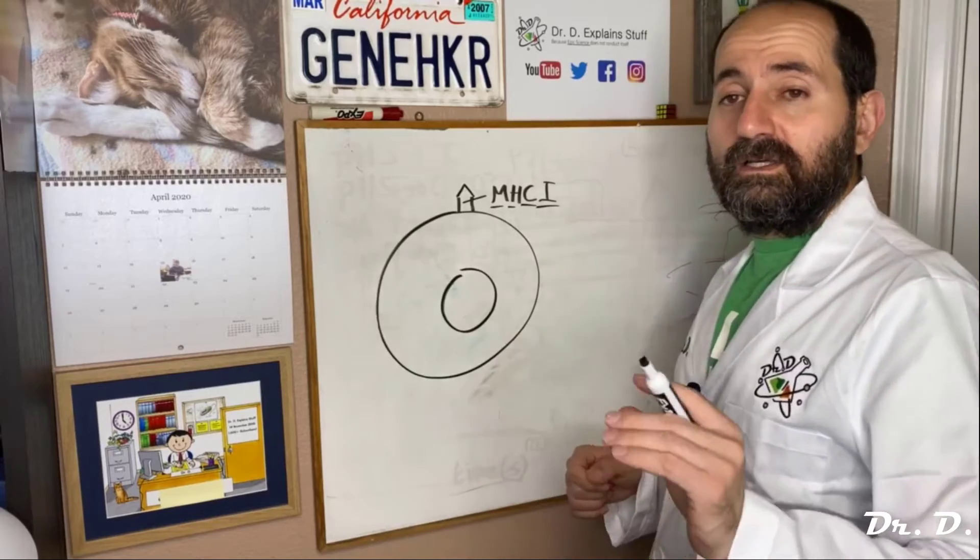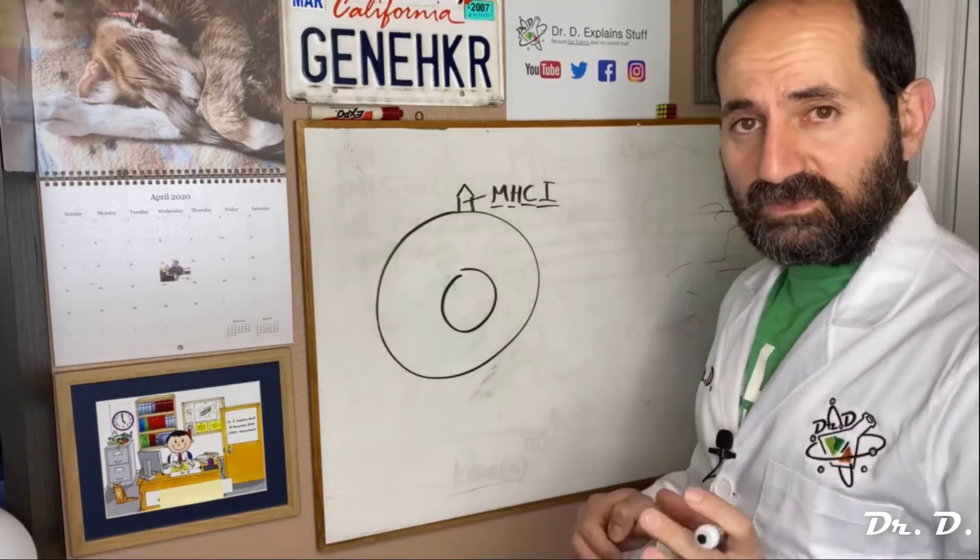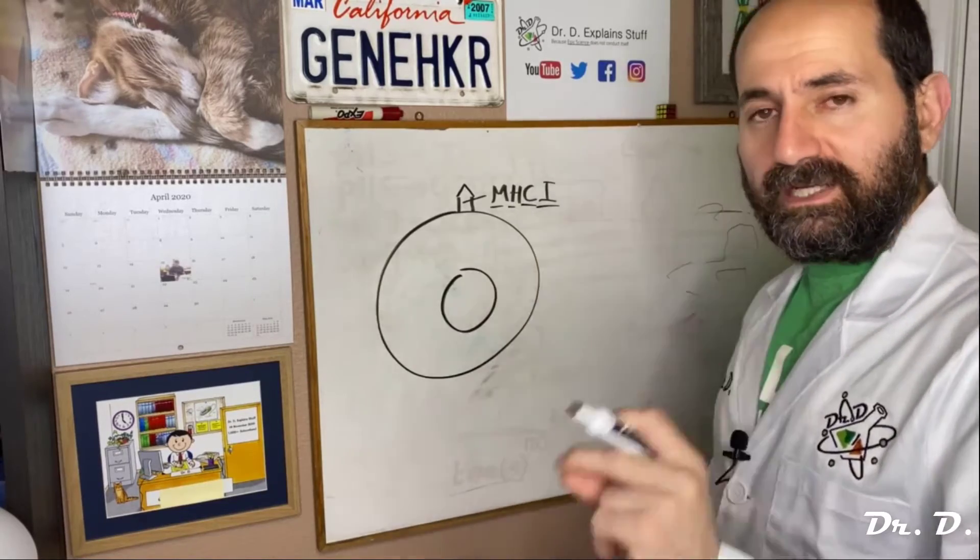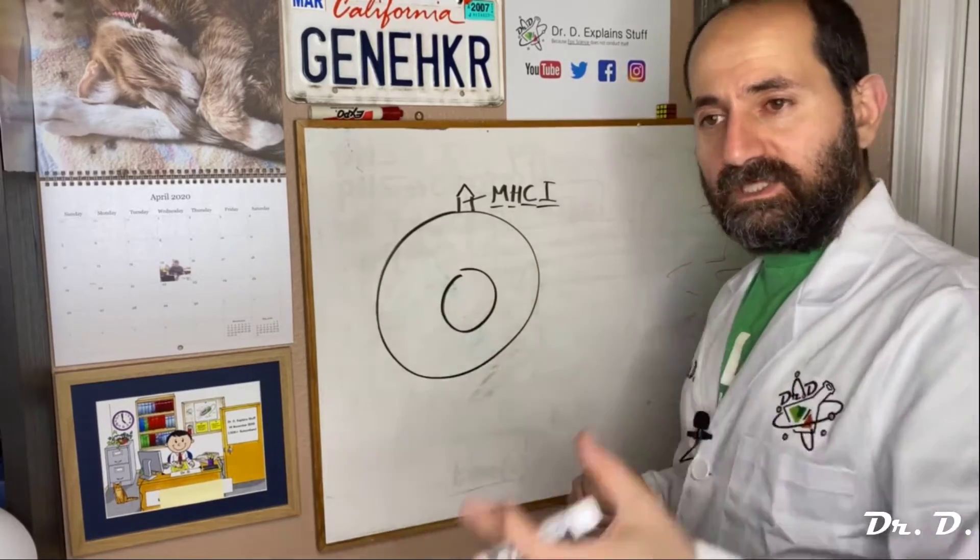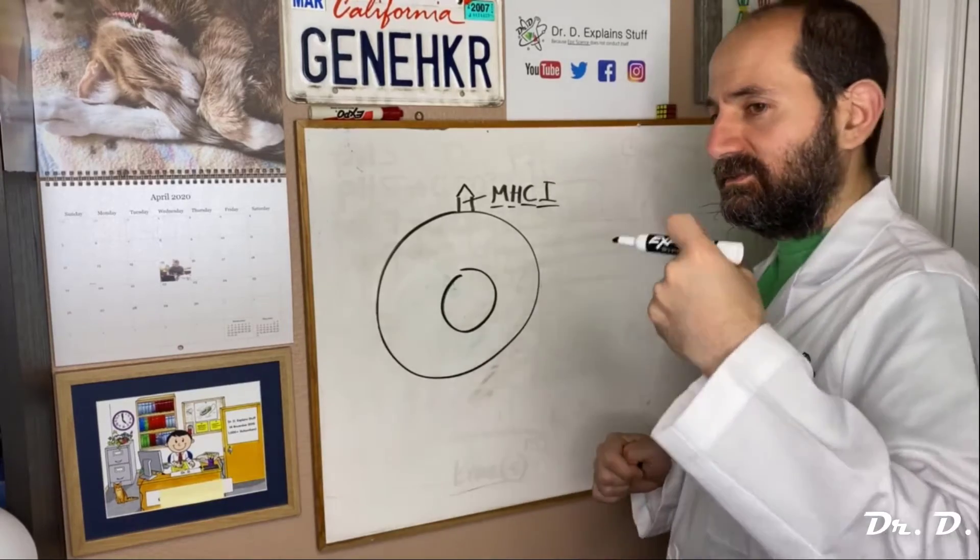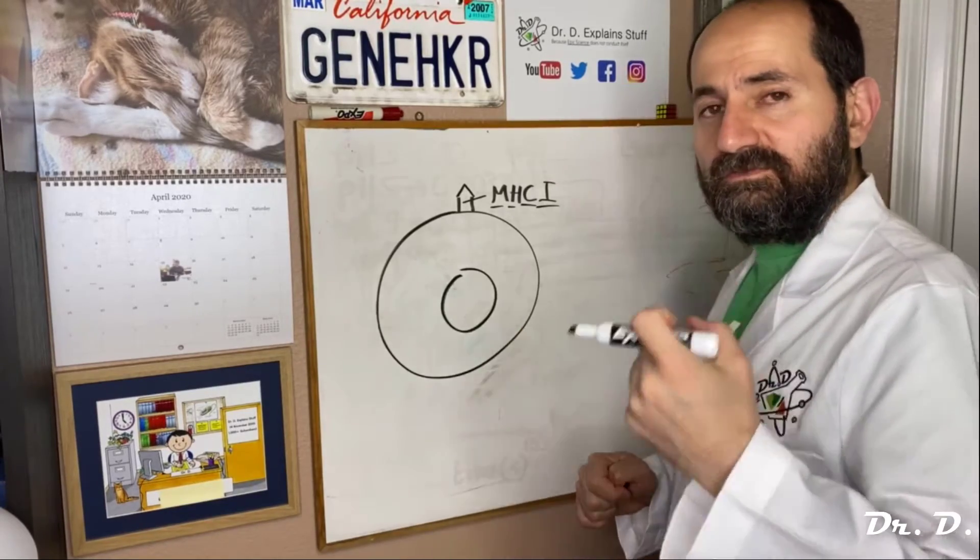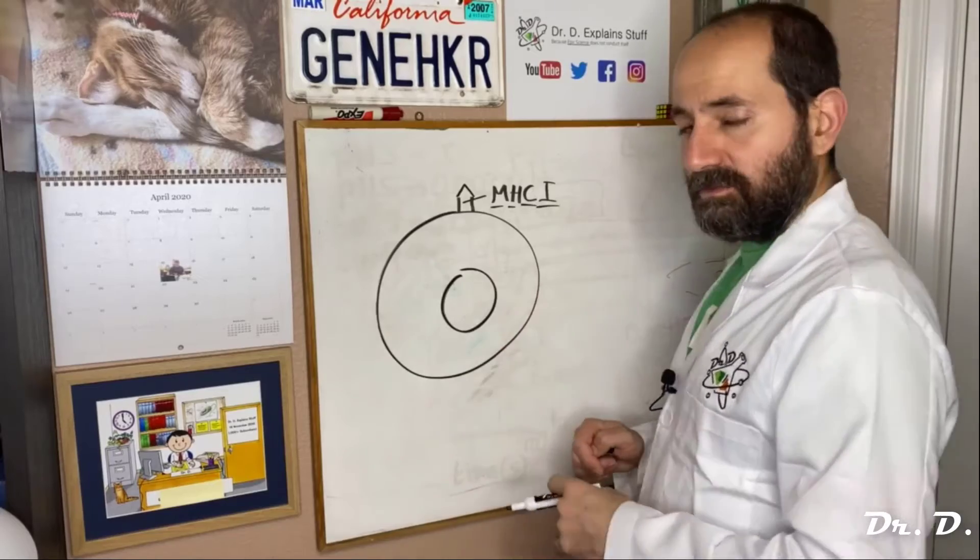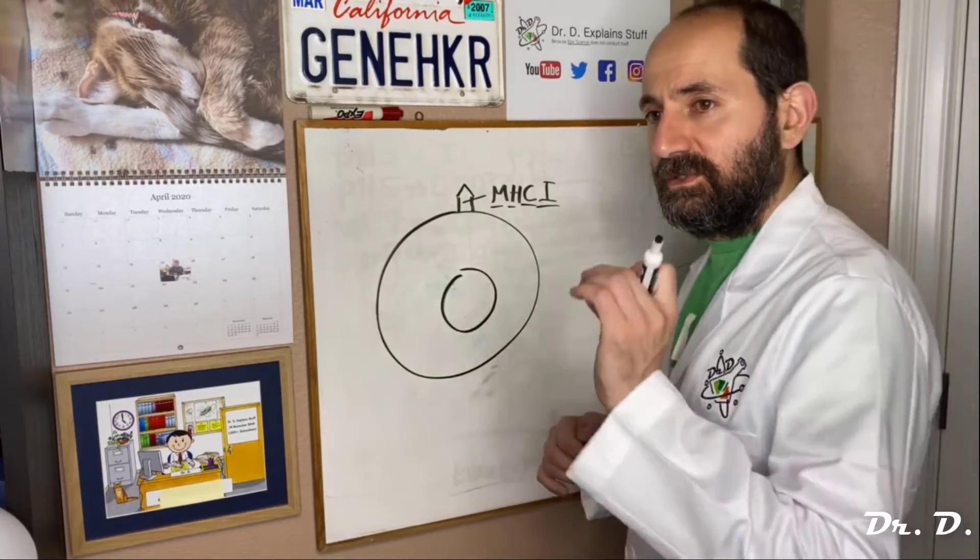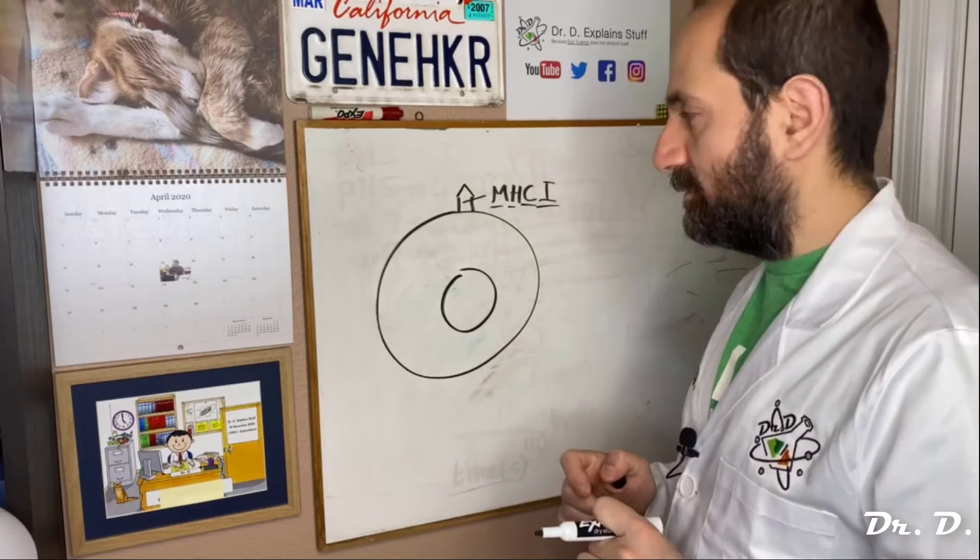This is all nucleated cells, including—and this is what some students confuse sometimes—even your professional antigen presenting cells. The B cells, dendritic cells, and macrophages all have MHC1 on their surface. All nucleated cells have MHC1 on their surface.